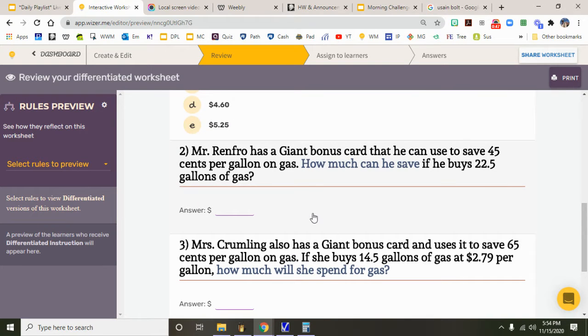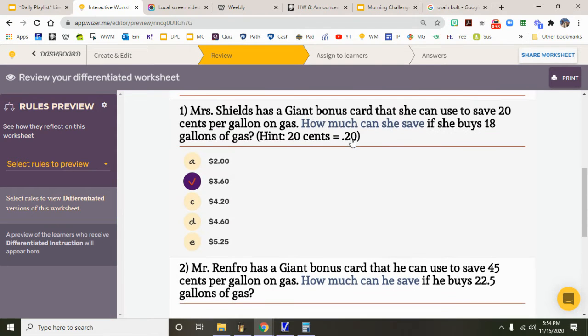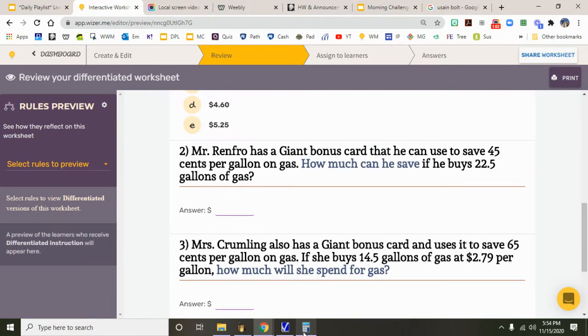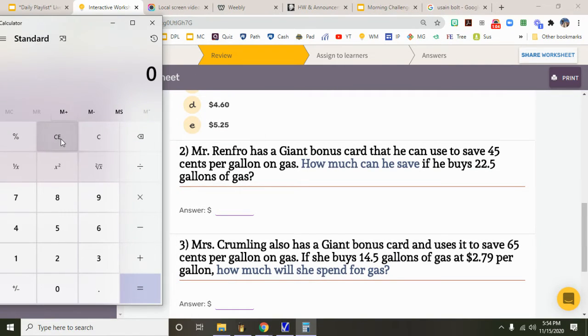Mr. McFro has a giant bonus card that he can use to save 45 cents per gallon on gas. How much can he save if he buys 22.5 gallons of gas? Well, this is very similar to question number one. He can save 45 cents, and how many times is he gonna save it? 22.5 times.